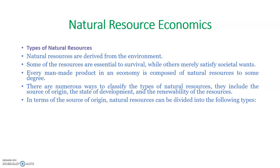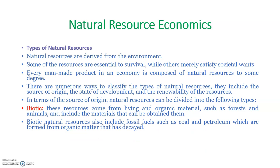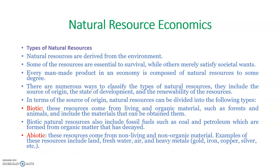In terms of source of origin, natural resources can be divided into biotic and abiotic types. Biotic resources come from living and organic material such as forests and animals, including materials that can be obtained from them. Biotic resources also include fossil fuels such as coal and petroleum, which are formed from decayed organic matter. Abiotic resources come from non-living and non-organic material — examples include land, fresh water, air, and heavy metals.